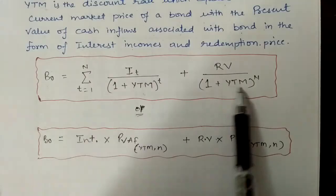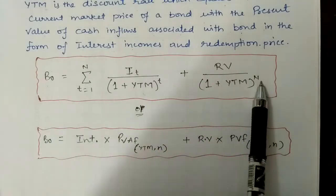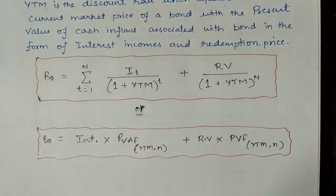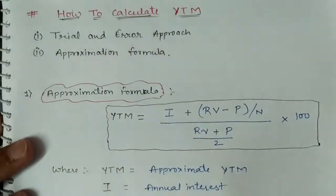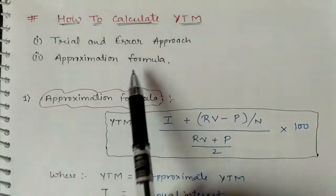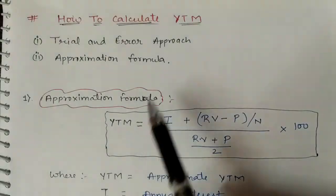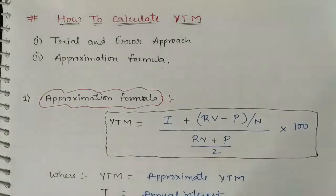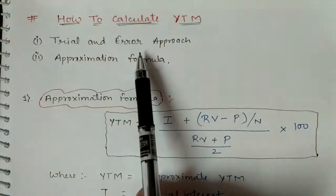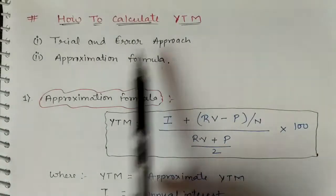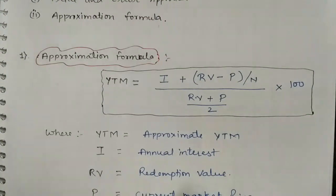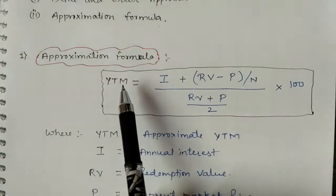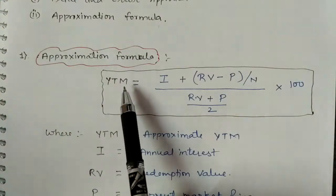We need to calculate YTM with the help of two methods: the Trial and Error approach, and the Approximation Formula. For calculating approximate YTM, we first use the approximation formula, and then apply the trial and error approach. The trial and error approach is complex and time consuming but gives the exact YTM required for the investor to make an investment decision. The approximation formula gives only an approximate YTM so that we can then apply trial and error.